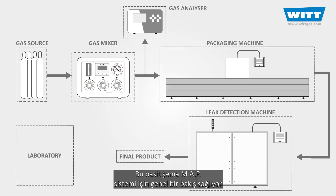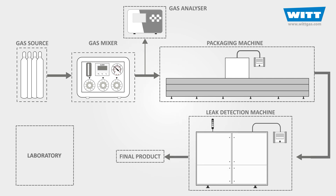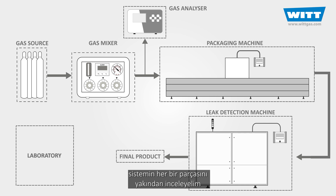This simple schematic gives an overview of the structure of a MAP system. As you can see, it's composed of different parts. To better understand this structure, let's focus on each part of this system one by one.